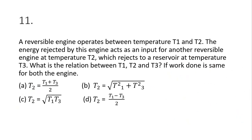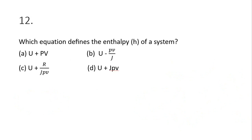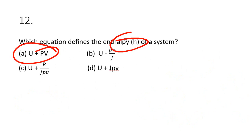Question 12: which relation defines enthalpy? Enthalpy is defined as H = U + PV. Option A is the correct answer. Note: enthalpy is a stored energy, and internal energy U is also a stored energy.